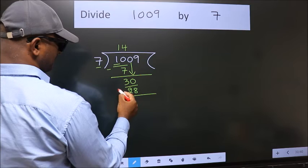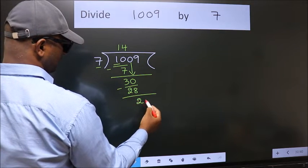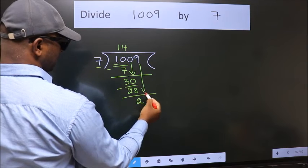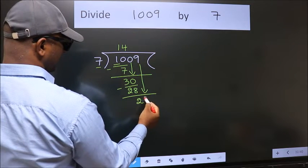Now we subtract. We get 2. After this, bring down the beside number. So 9 down.